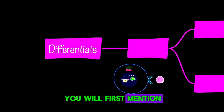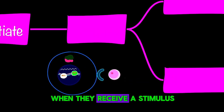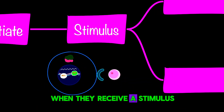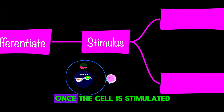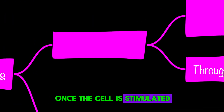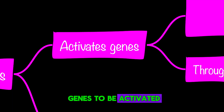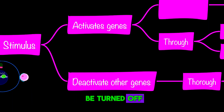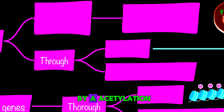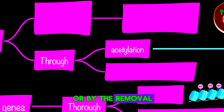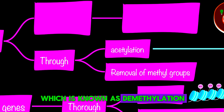You will first mention that cells differentiate when they receive a stimulus. This stimulus could be in the form of a hormone. Once the cell is stimulated, that will cause some genes to be activated and other genes will be turned off. Activation of genes occurs by acetylation or by the removal of methyl groups, which is known as demethylation.